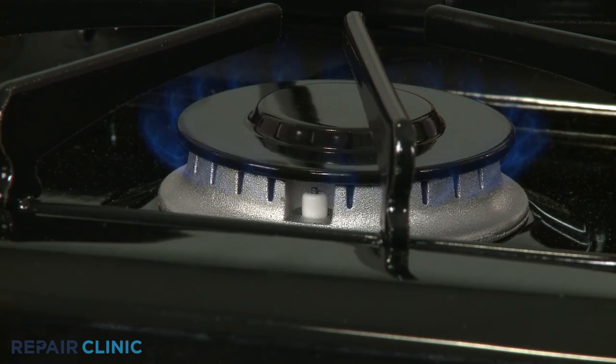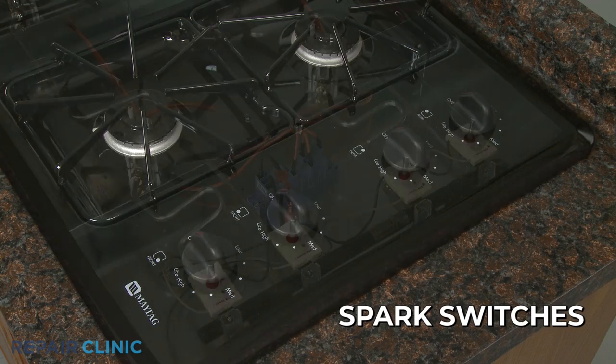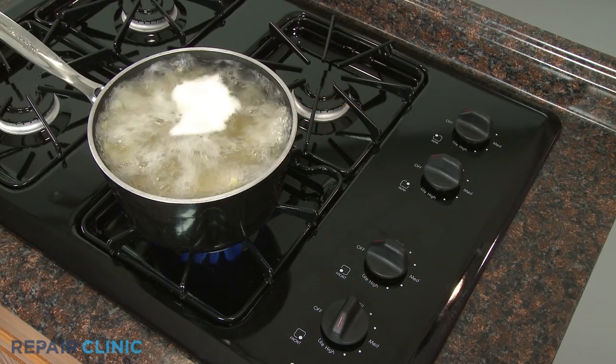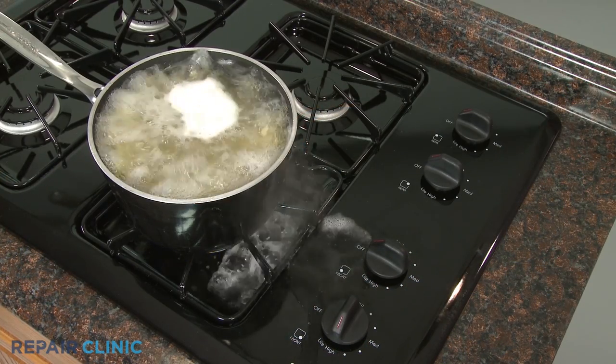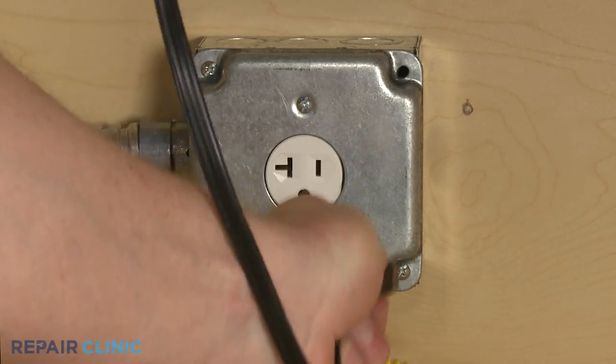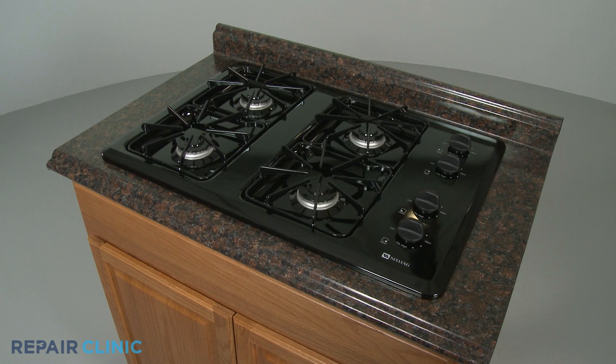If the electrodes spark continuously, one or more of the switches has probably shorted closed. A short is usually caused by liquid getting into the switch. If this happens, you should unplug the appliance and give the switches time to dry out.